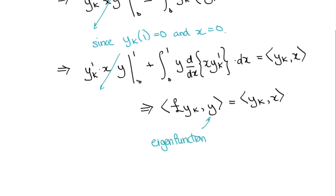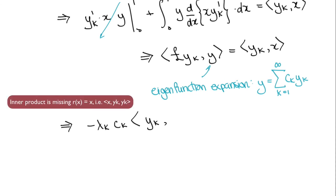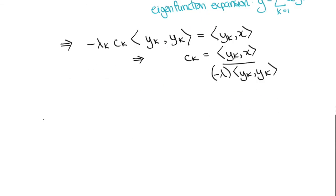We now use an eigenfunction expansion for y. Also, from the previous problem, we know that we can replace l, yk, by negative lambda k times x times yk. Thus, this gives us the eigenfunction coefficients, ck, which we could have immediately written down using the formula, but it's always good to derive it yourself.